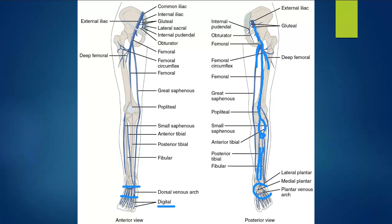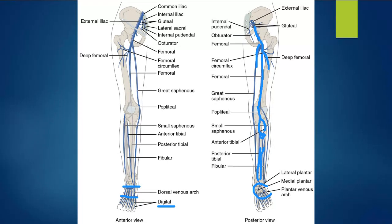The common femoral becomes the external iliac vein once it travels into the pelvis. The internal iliac vein joins with it and they become the common iliac veins. The right and left common iliac veins from each leg join to form the IVC. The main takeaway is the relationship of the calf veins and what happens at the hip: at the knee the four posterior tibial and peroneal veins join to form the tibial peroneal trunk; anterior tibials join to form the popliteal; at the hip the profunda and greater saphenous drain into the femoral to become the common femoral.